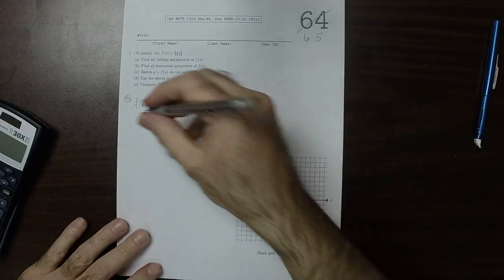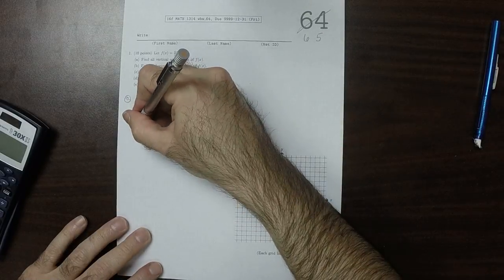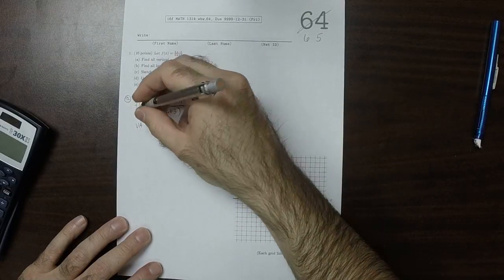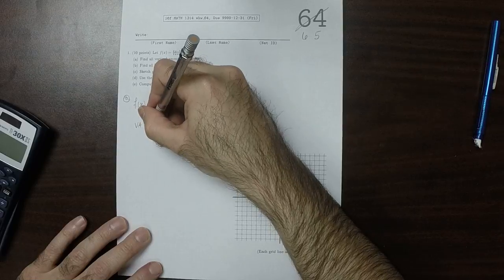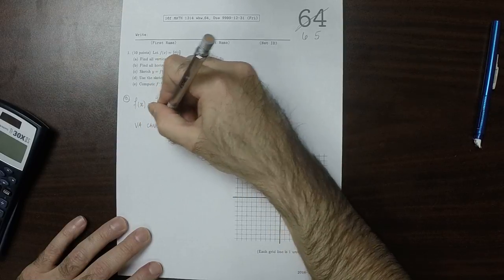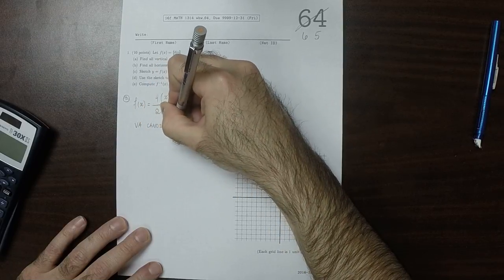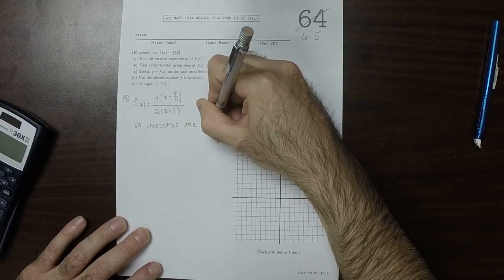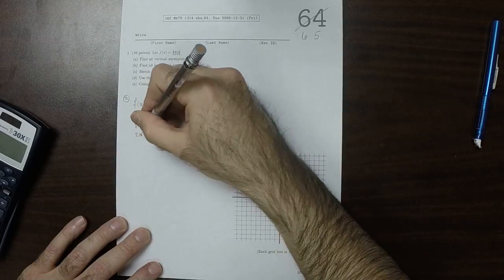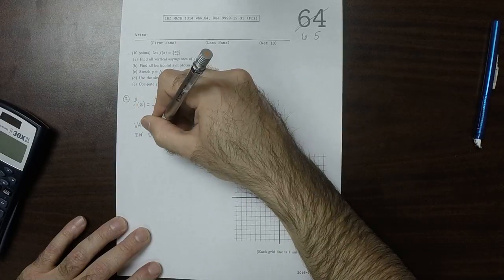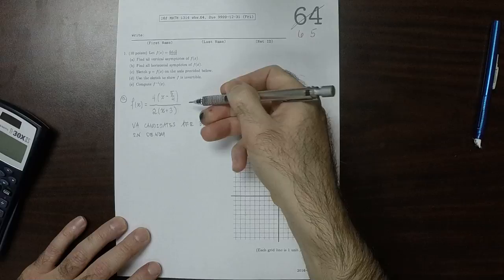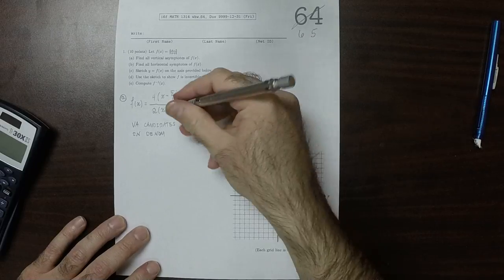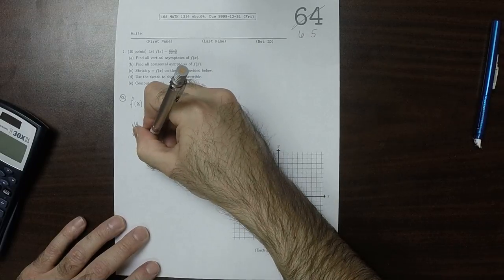And we have vertical asymptotes. The candidates for VA, for vertical asymptotes, are zeros in the denominator. Because we factored F, you can see that the only candidate is X is negative 3.